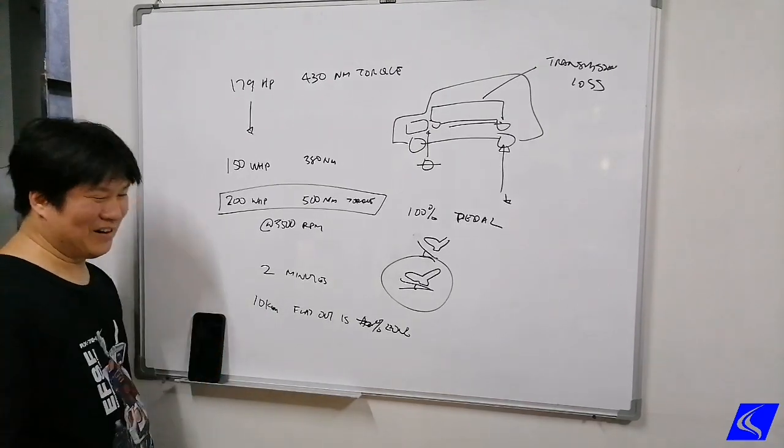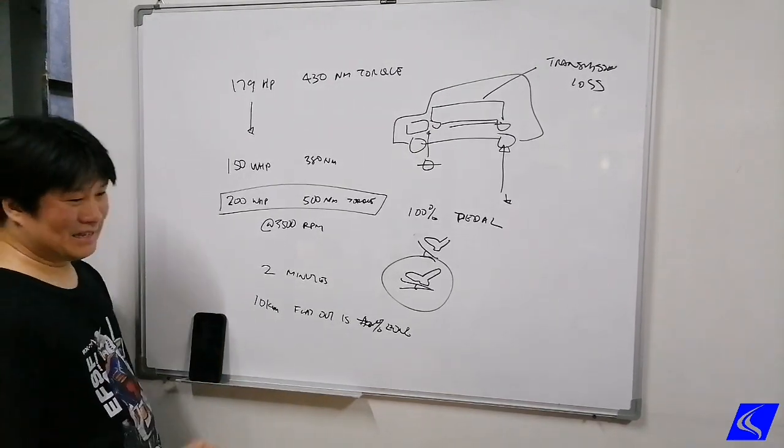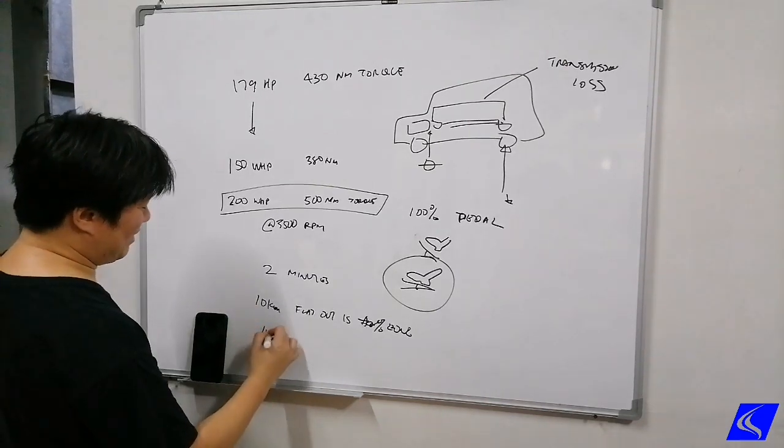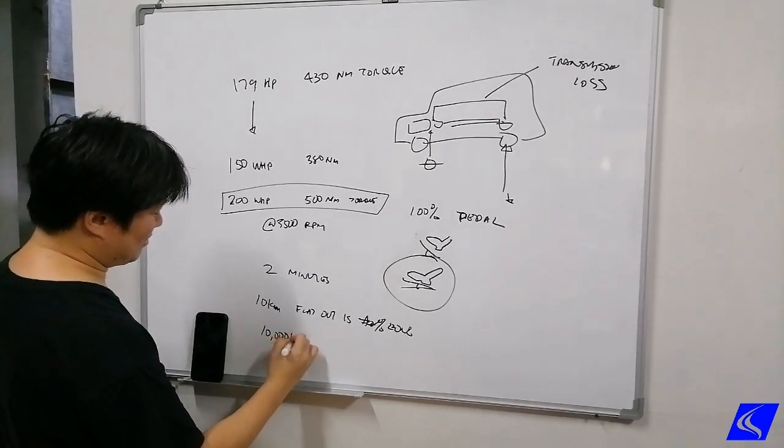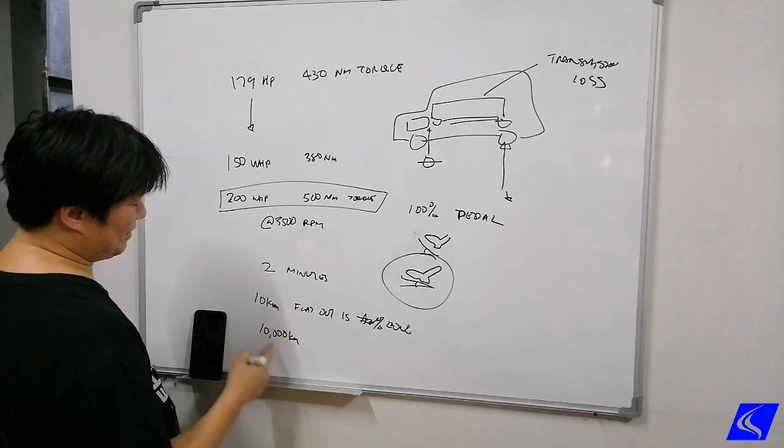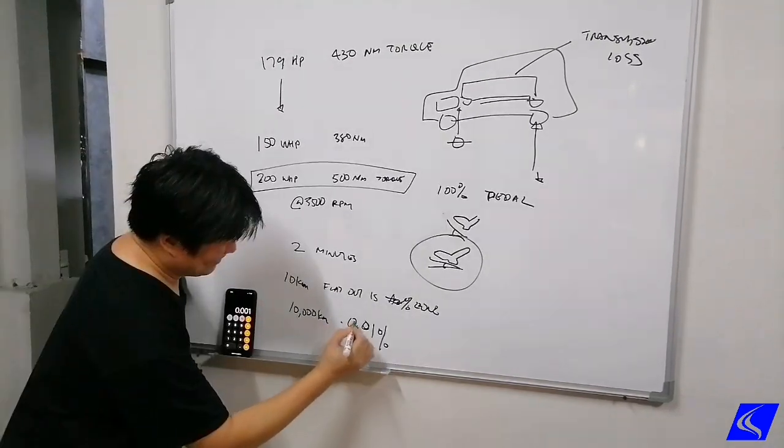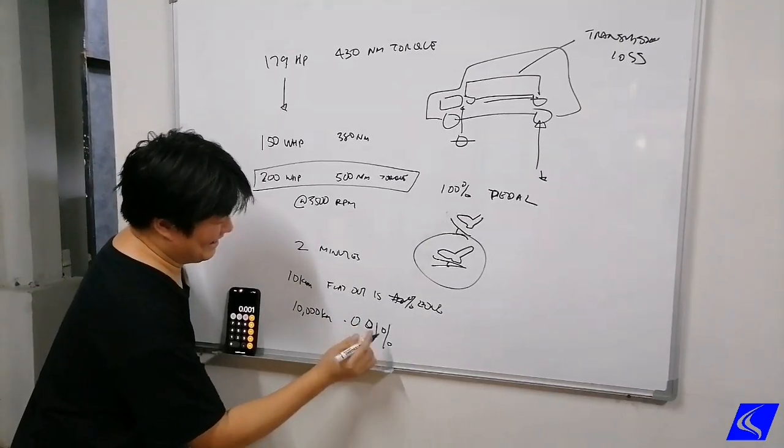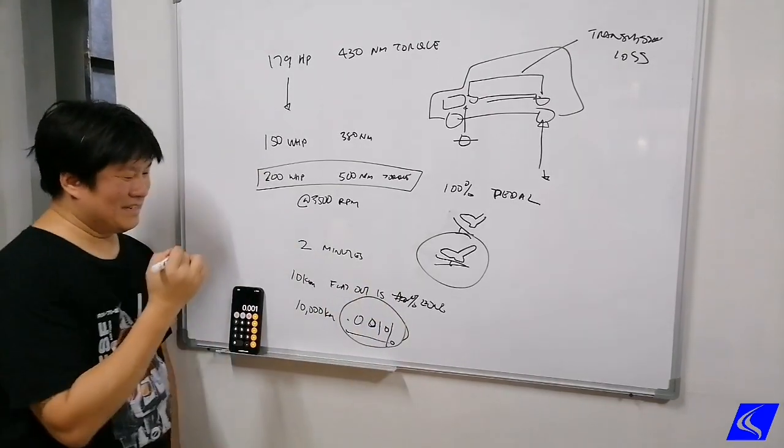Again, assuming that you do drive for 10 kilometers straight and hallelujah, great, nothing exploded, will it lessen the engine life? Also no, because in that one year you travel an average of 10,000 kilometers. 10 kilometers is only 0.001%. There you go, so this is your total shortened engine life by driving flat out for 10 kilometers.